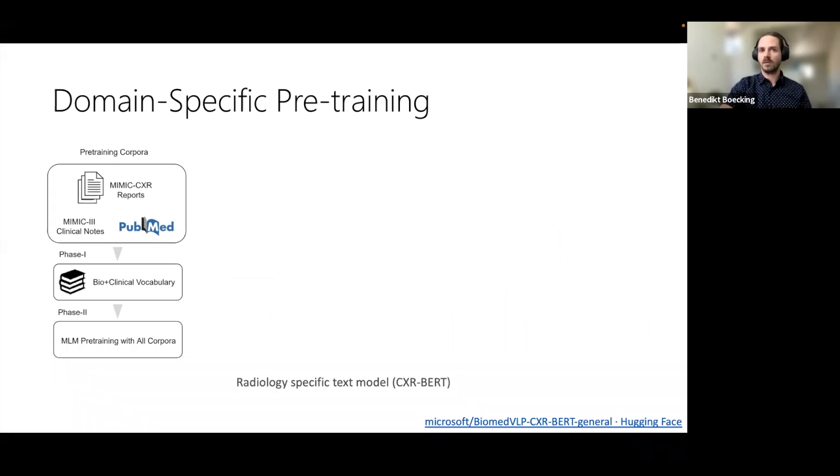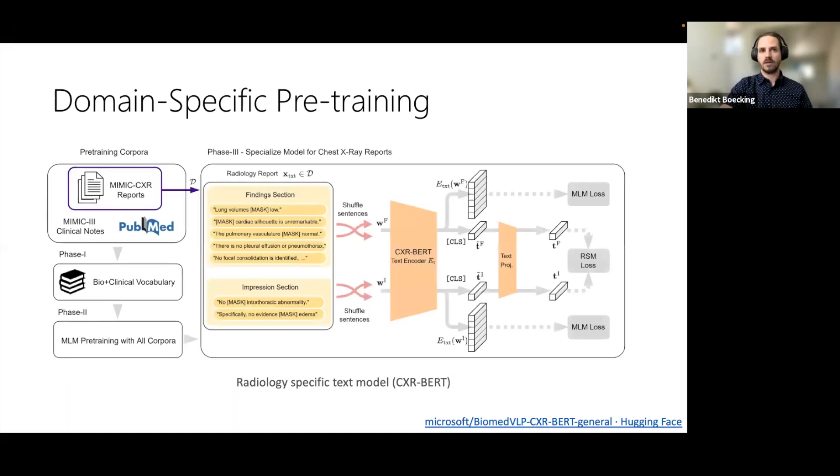So to start, we assembled a text corpus to pre-train a domain-specific text encoder, CXR-BERT, which is available on HuggingFace. Our encoder has a domain-specific vocabulary, it is pre-trained on clinical notes and PubMed abstracts, and it is then specialized to chest X-ray reports through masked language modeling combined with a text-only self-supervised objective which matches specific radiology sections across reports.